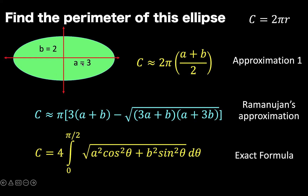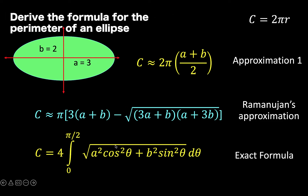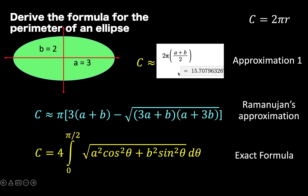Let's say we have an ellipse with a equals 3 and b equals 2. What is the perimeter of this ellipse? Using these two approximation formulas, let's compare the results with those from the definite integration formula. Using Desmos graphing calculator with a equals 3 and b equals 2, the formula c equals 2 pi times the quantity a plus b over 2 gives us a value of 15.70796326, rounded to 8 decimal places.